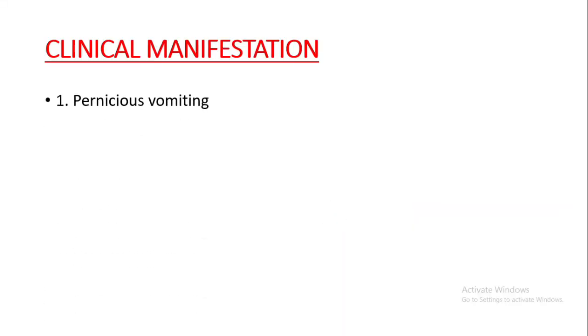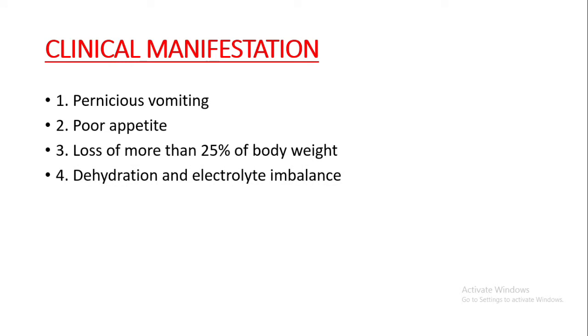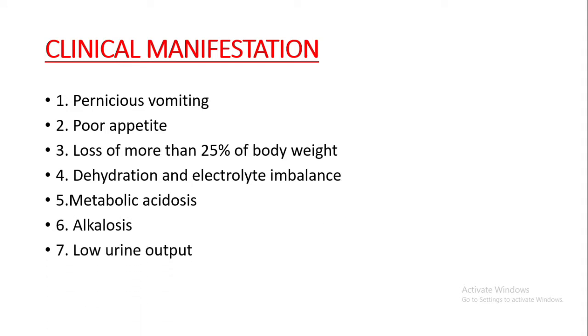Next, the clinical manifestations: Number 1 is pernicious vomiting — that is, anything taken orally is rejected. Poor appetite and loss of more than 25% of body weight. Dehydration and electrolyte imbalance, metabolic acidosis due to starvation, alkalosis due to loss of hydrochloric acid in vomitus, low urine output, rapid pulse, and low blood pressure.